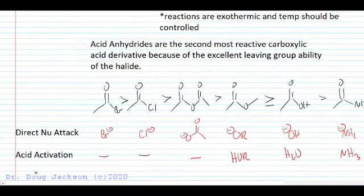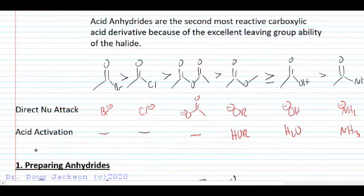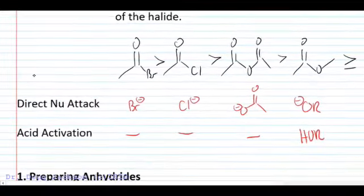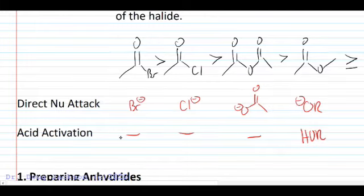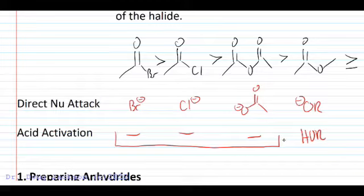Again, we said they're the second most reactive carboxylic acid derivative. Let's look at why. It's because they've got such a good leaving group. The acid bromides, acid chlorides, and anhydrides will all be able to react without needing acid activation. So we'll have a direct nucleophilic attack to kick off a bromide, chloride, or a carboxylate leaving group. Whether those get protonated at the end depends on the identity of the nucleophile, but initially in the tetrahedral intermediate we'll kick off one of these good leaving groups.